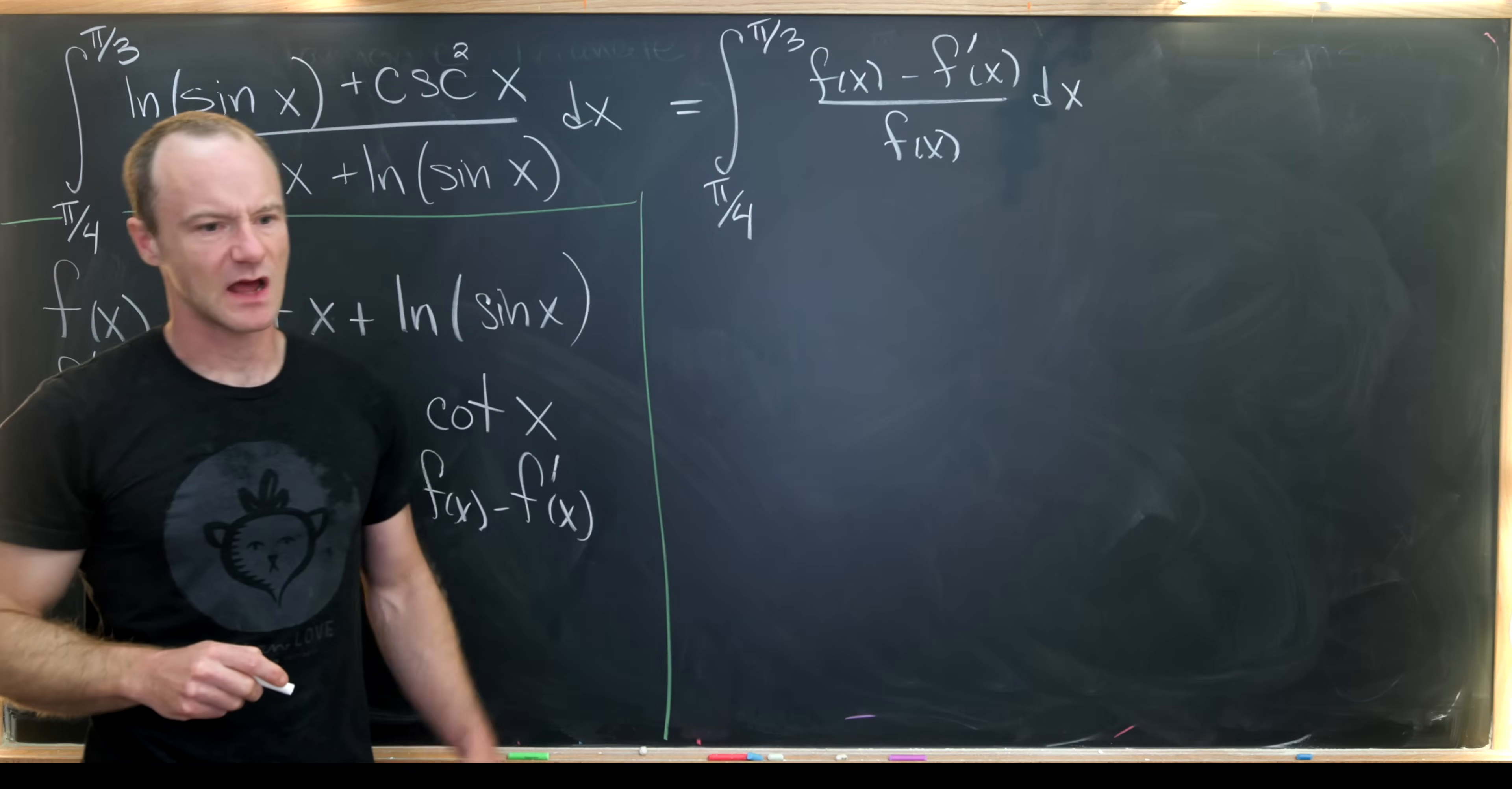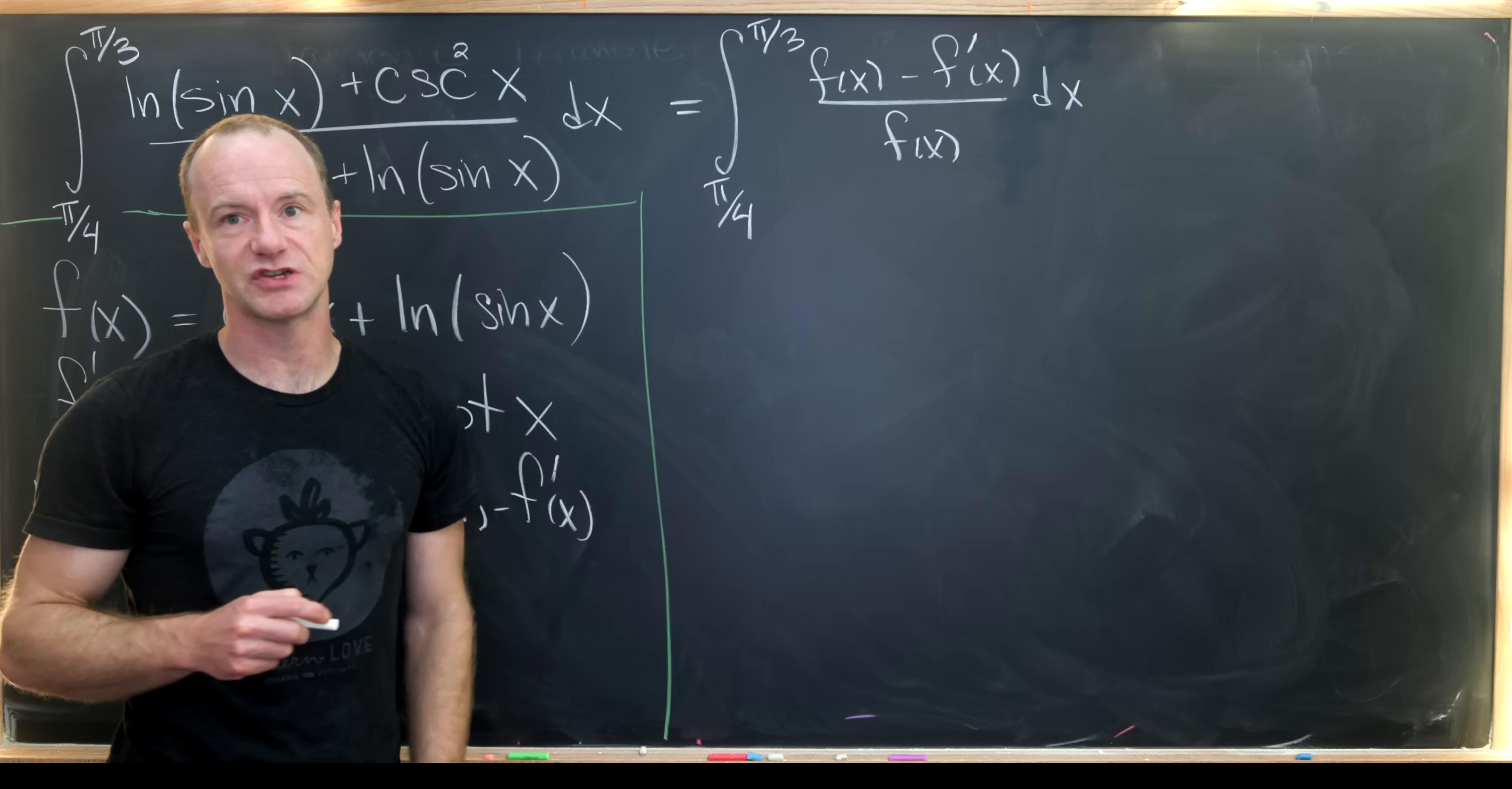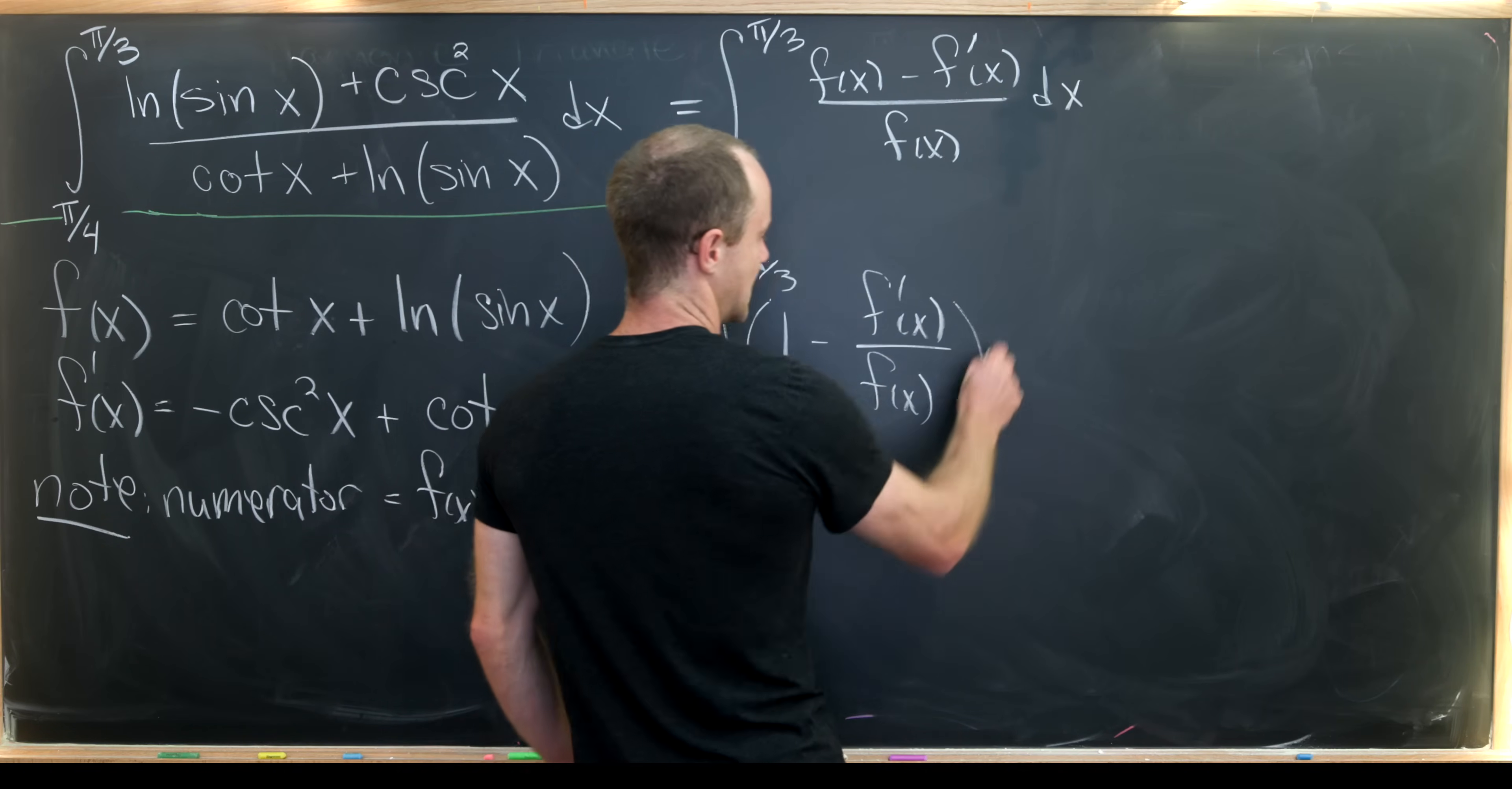Now where should we go from here? Well, notice if we have f of x over f of x, that's just one. If we have f prime of x over f of x, that's like some sort of natural log, keeping in mind the chain rule. So that gives us motivation to split this into two fractions. So let's do that. So we've got the integral from π/4 to π/3 of one minus f prime of x over f of x, and then dx.